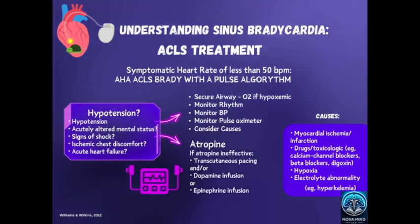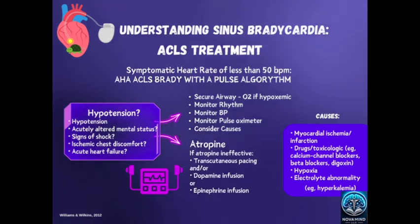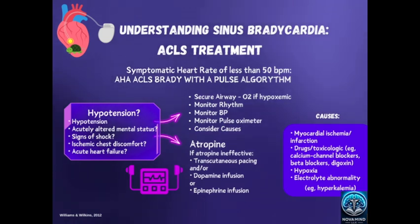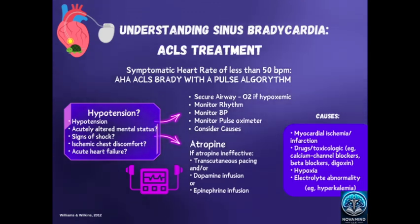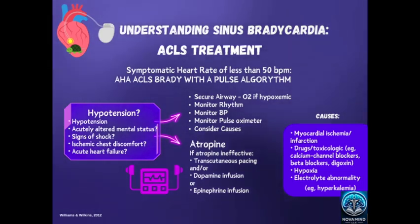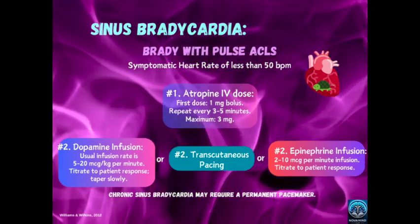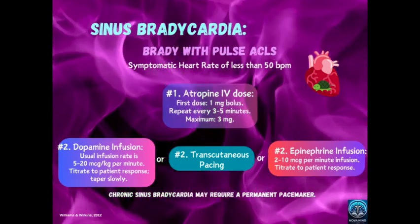To understand sinus bradycardia ACLS treatments, AHA guidelines indicate that a symptomatic heart rate of less than 50 BPM triggers the bradycardia with a pulse algorithm. Once BLS is established, the first-line medication is atropine. If atropine is ineffective, transcutaneous pacing is the next choice, and/or dopamine infusion or epinephrine infusion. Remember, causes for bradycardia include myocardial ischemia or infarction, drugs such as calcium channel blockers, beta blockers, or digoxin, hypoxia, and electrolyte abnormalities like hyperkalemia. For more information on ACLS guidelines for bradycardia with a pulse, become a member for exclusive in-depth content.